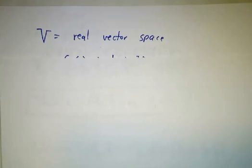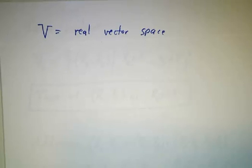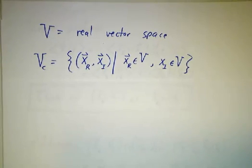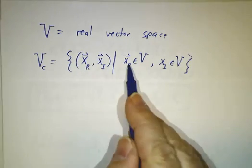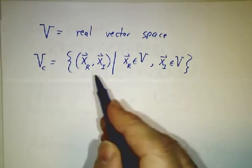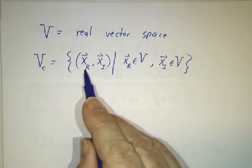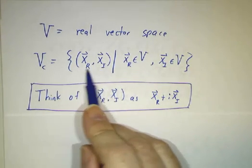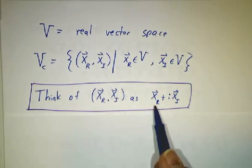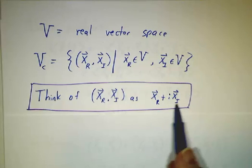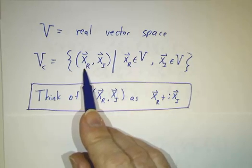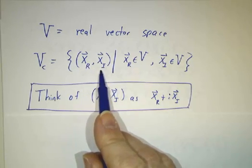So here's the game. Let's suppose we've got a real vector space. We're going to make the complex vector space by taking two copies of the real vector space. We're going to take ordered pairs of two vectors, each of which lies in the real vector space, and then we're going to call the first copy xr and the second copy xi. The way to think of them is this really is a placeholder for the complex combination xr plus i times xi. You should think of xr as being the real part of a vector and xi as being the imaginary part of a vector.